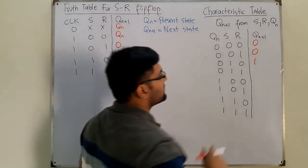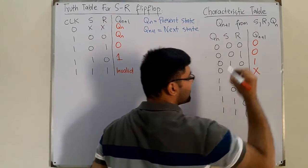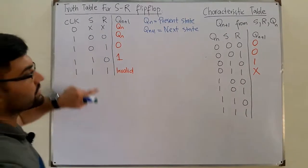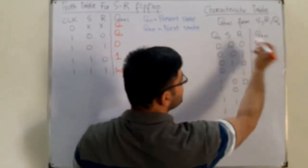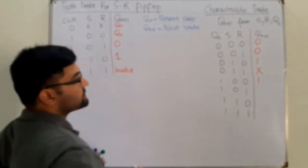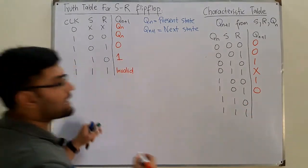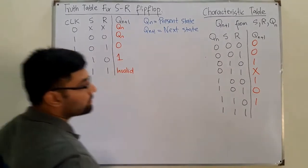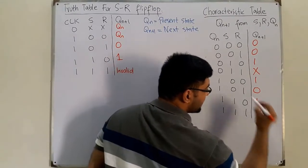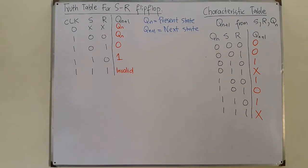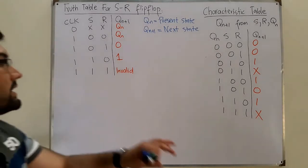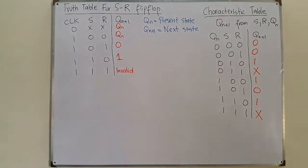When S=1, R=1, this is an invalid state — we put a don't care. Again for Q(n)=1 with S=R=0, Q(n+1) = Q(n) = 1. With S=0, R=1, the output is 0. With S=1, R=0, the output is 1. Again with S=1, R=1 it's an invalid state represented by don't care. So the next state column is: 0, 0, 1, don't care, 1, 0, 1, don't care.